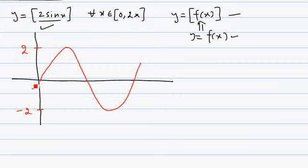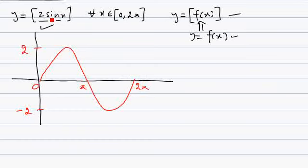On the x-axis, we mark 0, π, and 2π. After plotting the graph of f(x) = 2sin(x), the next step is to plot horizontal lines — we plot y = k lines.